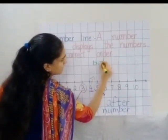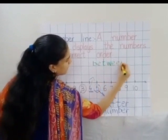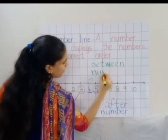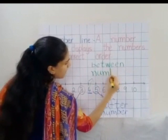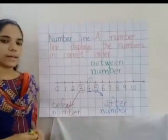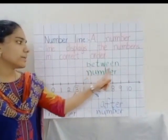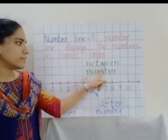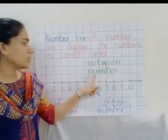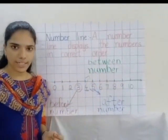B-E-T-W-E-E-N, between number. B-E-T-W-E-E-N, between number. 4 will be the between number. Did you understand children?